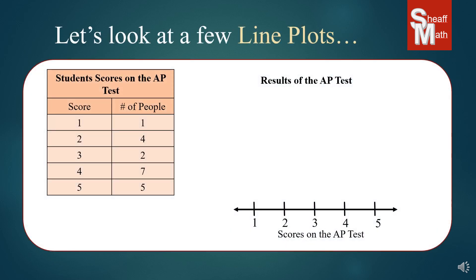Let's take a look at a few different line plots. What we have here is a table on the left, and the best thing to do when you're looking at graphs is to understand what's going on. We look at the title and it says 'Students Scores on the AP Test.' Then we have the score column, and it looks like one, two, three, four, and five are the actual scores you can get on the AP test.